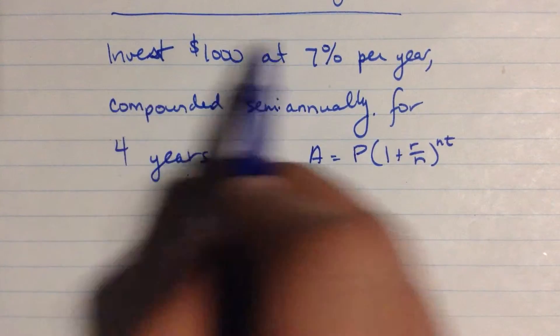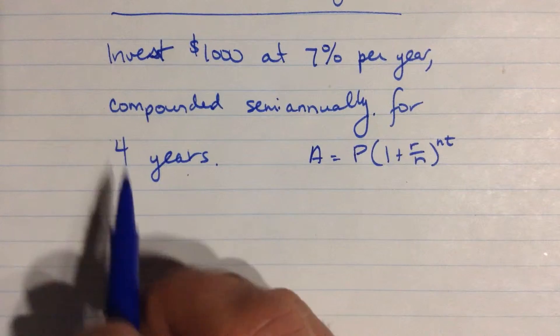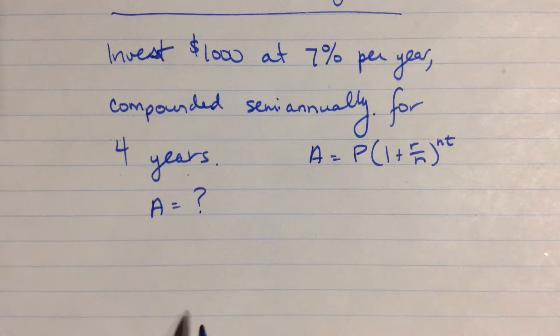So the values that we have from this description here, we want to find out what the final value is, or the future value. So A is the future value, that's what we're trying to find.